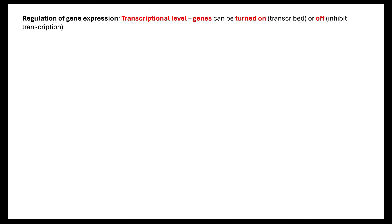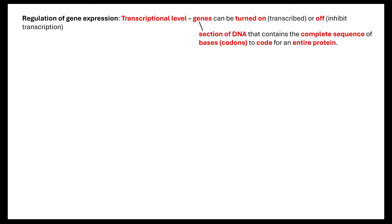Let's take a step back and remind ourselves about what is going to happen when a gene is expressed. We know that a gene can be either turned on where it is transcribed, or it can be turned off where it is inhibited in that transcription. A gene is a section of DNA that contains the complete sequence of bases, the codon, to code for an entire protein.